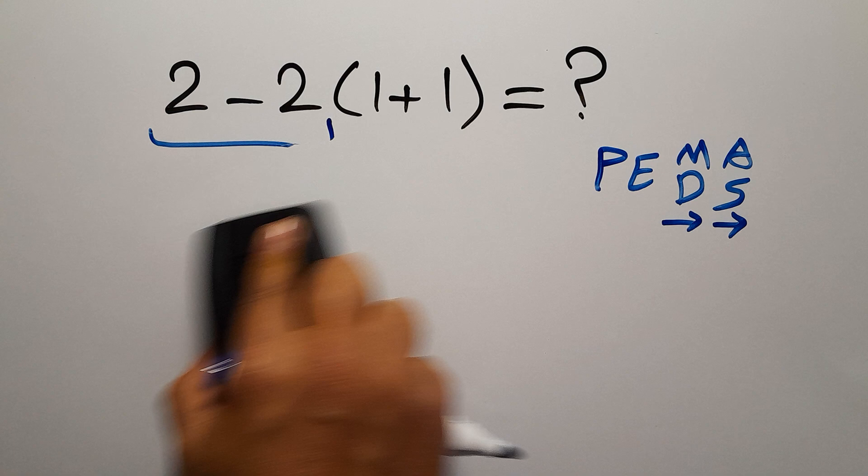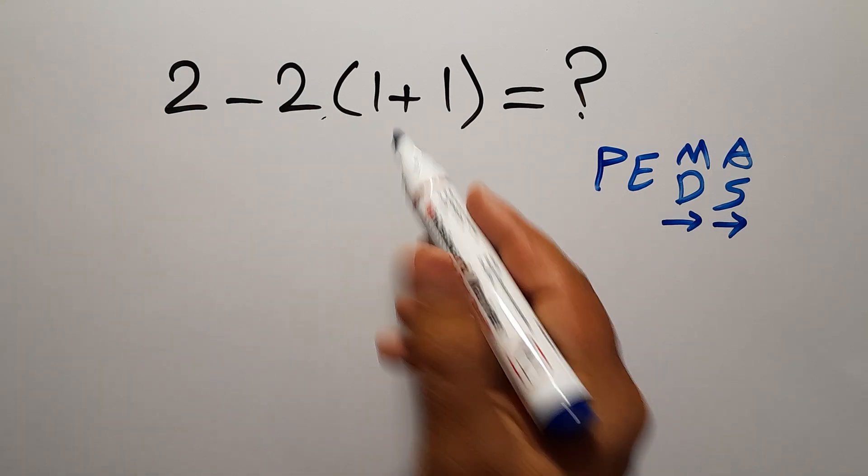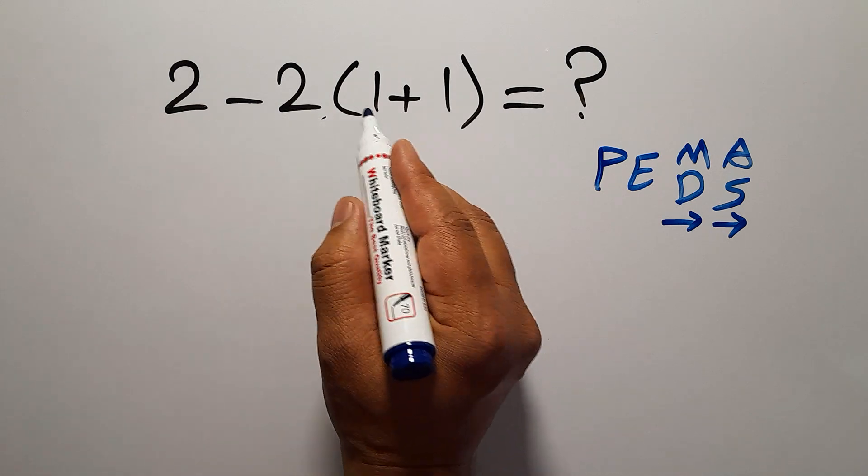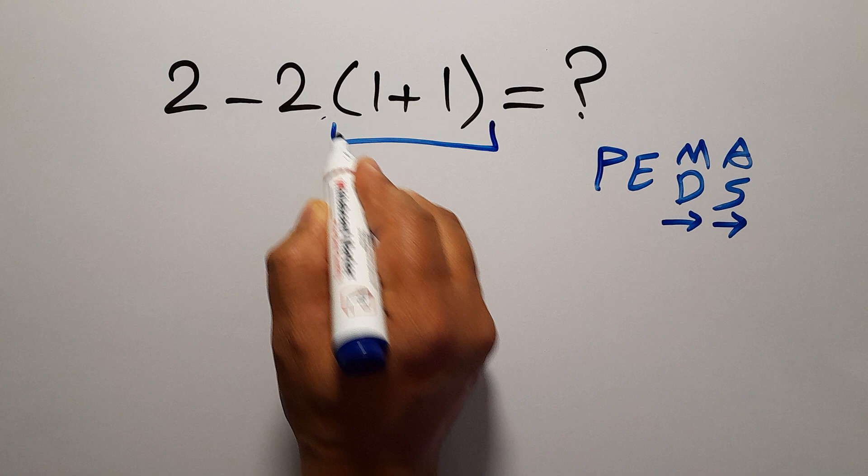So first we have to do this parentheses, not this subtraction. Inside this parentheses, we have 1 plus 1, which equals 2.